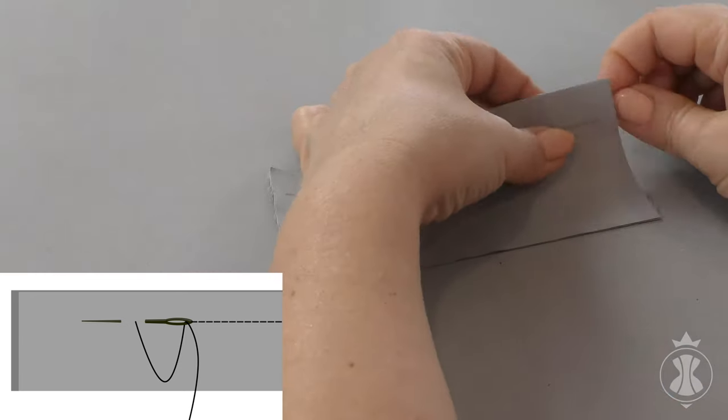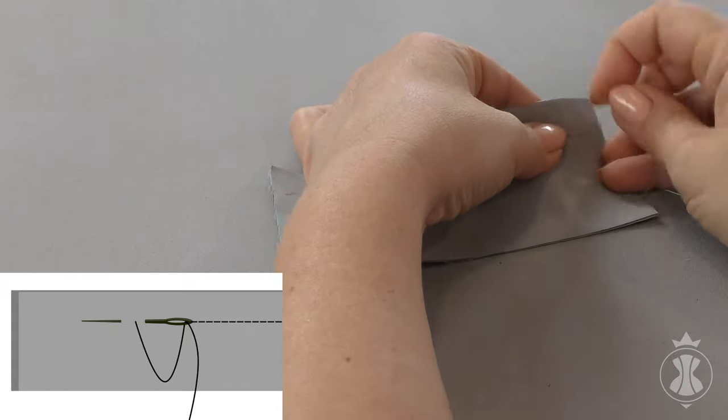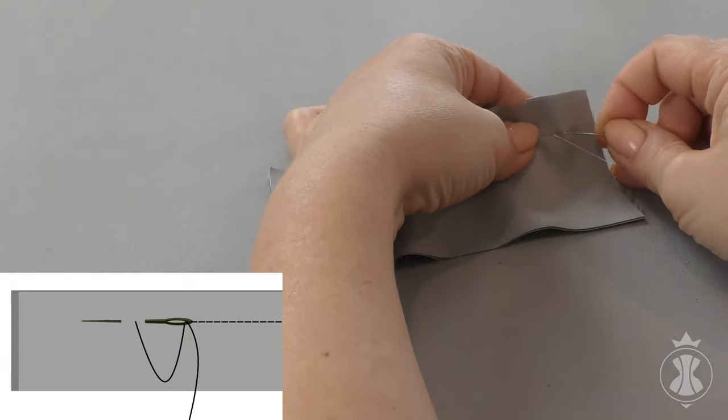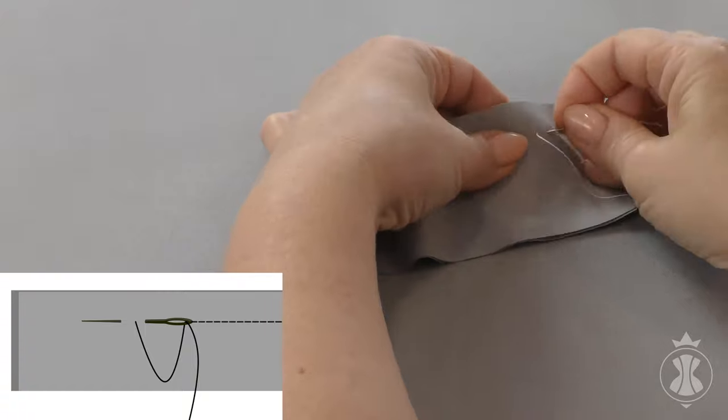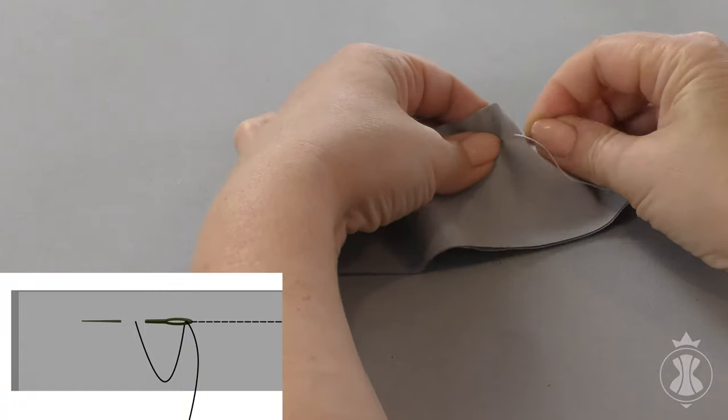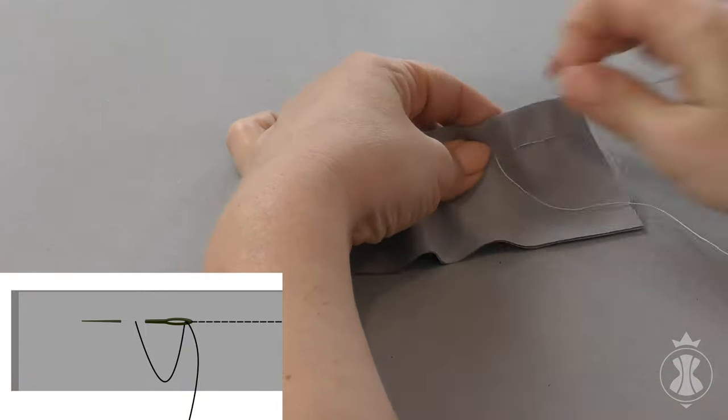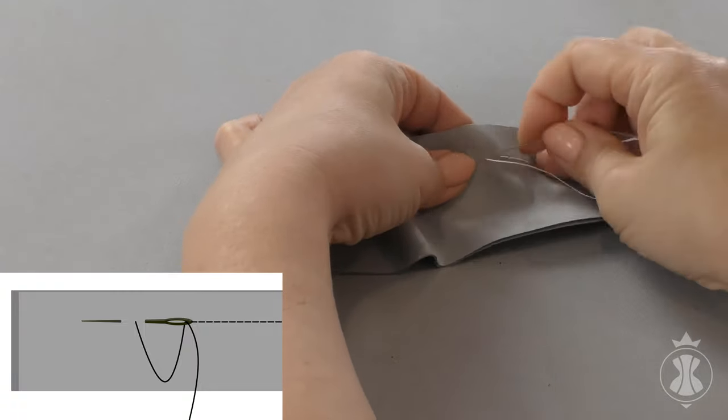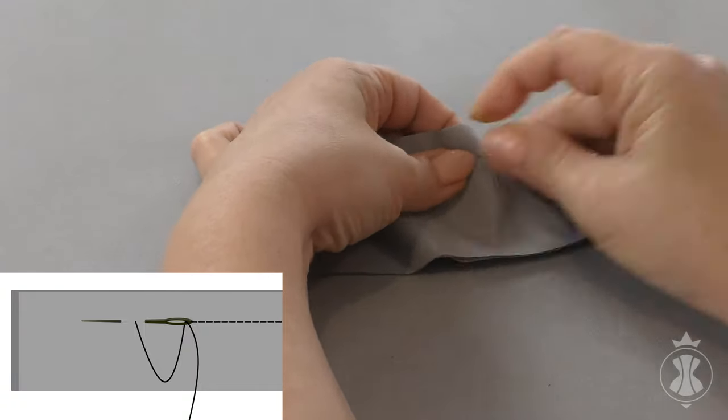Backstitch. Backstitch copies the look of machine stitching and is usually done in areas where it is hard or impossible to do a machine seam. For example, when gathering multiple layers of a skirt.